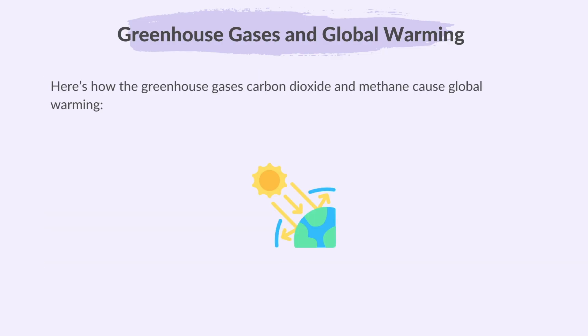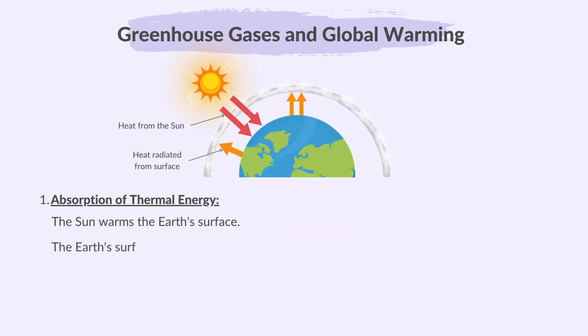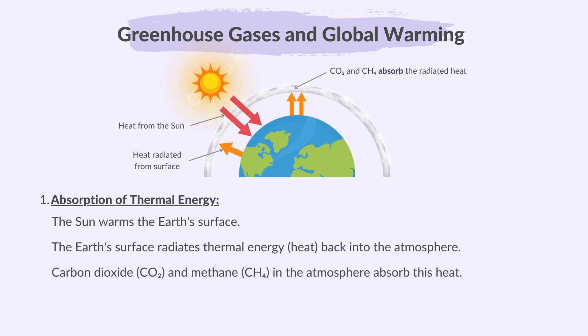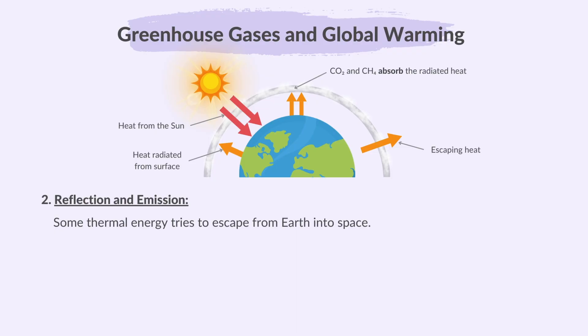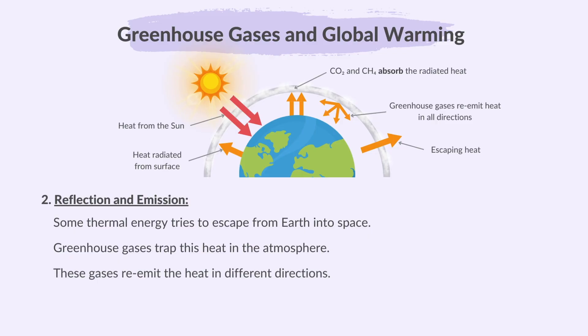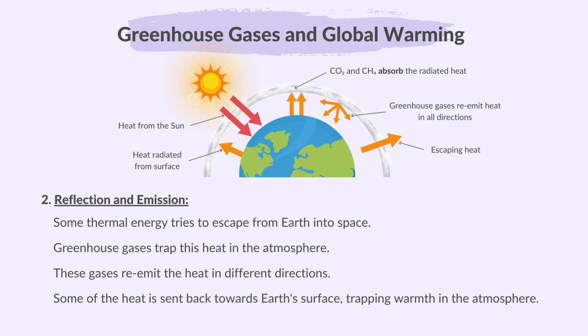Here's how the greenhouse gases carbon dioxide and methane cause global warming. The sun warms the Earth's surface. The Earth's surface radiates thermal energy, or heat, back into the atmosphere. Carbon dioxide and methane in the atmosphere absorb this heat. Some thermal energy tries to escape from Earth into space. Greenhouse gases trap this heat in the atmosphere and re-emit it in different directions. Some of the heat is sent back towards the Earth's surface, trapping warmth in the atmosphere.